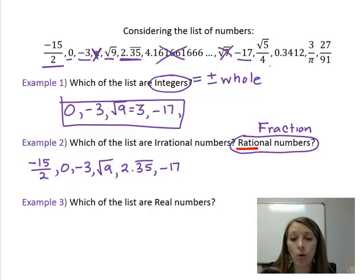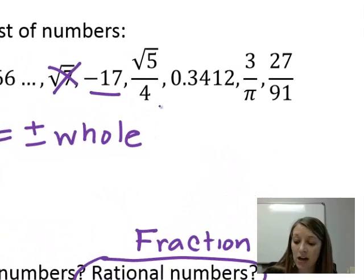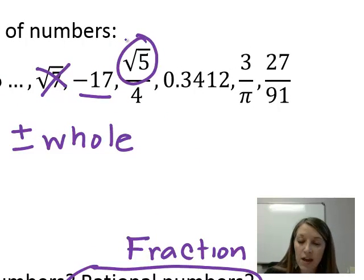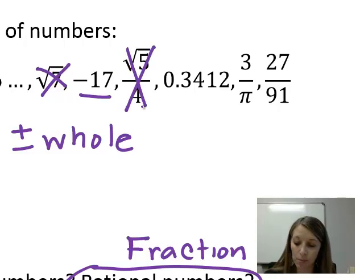Square root of 5 over 4. That is a tricky one. And that might be one of the trickiest ones on this list. It is a fraction. It is obviously a fraction. But half of the fraction, square root of 5, is an irrational number. Because square root of 5 does not come out evenly. So if any part of the number is irrational, that makes the whole part of the fraction irrational. So square root of 5 over 4 is an irrational number.